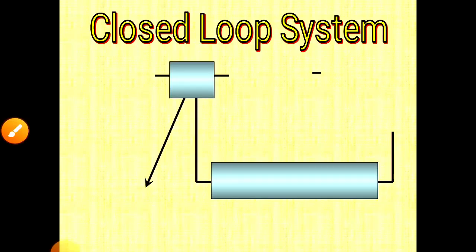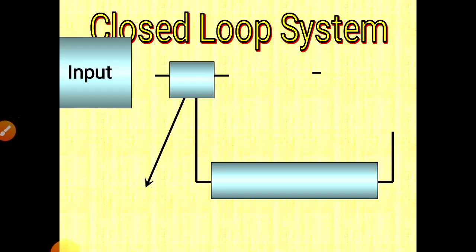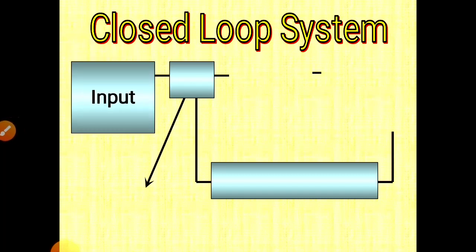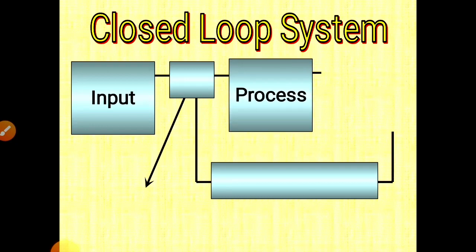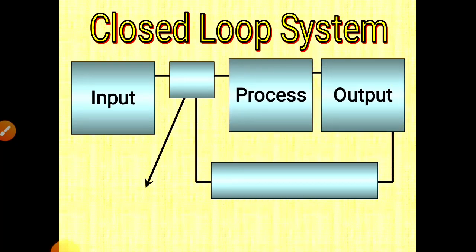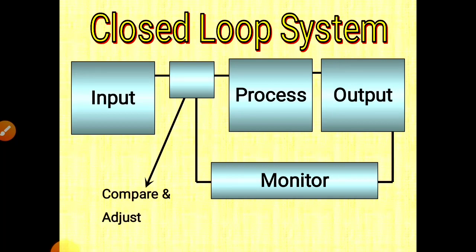Now try to understand the closed loop system. In the closed loop system, suppose one process is there. We give input to that process and the process generates some output. Now this output is sensed with the help of some sensor. Here it is written monitor — monitor monitors the output and compares it with the input. So output is compared with input with the help of a comparator.